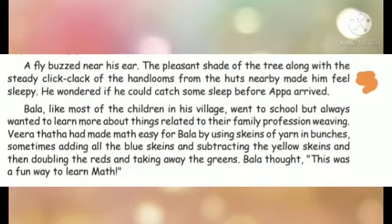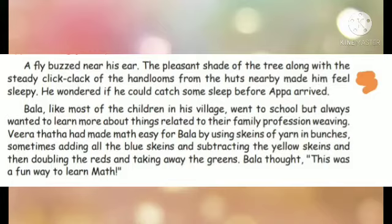Viratata had made math — math means mathematics — easy for Bala by using skeins. Skeins means a length of thread of yarn in bunches. Yarn means thread. Sometimes adding all the blue skeins and subtracting — subtract means deducting — the yellow skeins, and then doubling the reds and taking away — doubling means making twice of something, taking away means removing — the greens. Bala thought this was a fun way to learn math. Fun means joy or enjoyment.